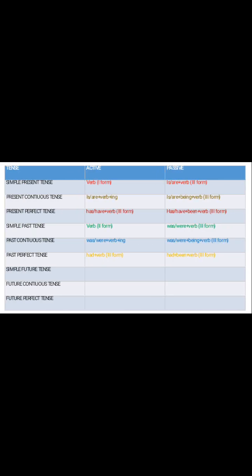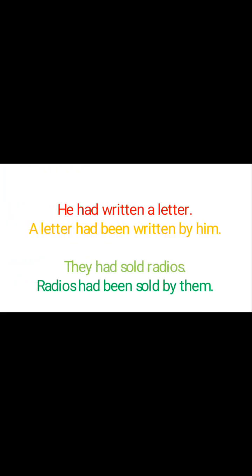Now the third case of past tense — past perfect tense. We can identify this tense by the presence of 'had' plus the third form of the verb. To convert it into passive form, we write 'had' plus 'been' and the third form of the verb. For example: 'He had written a letter' — here 'had' indicates the past perfect tense.